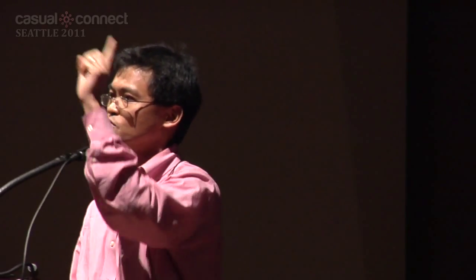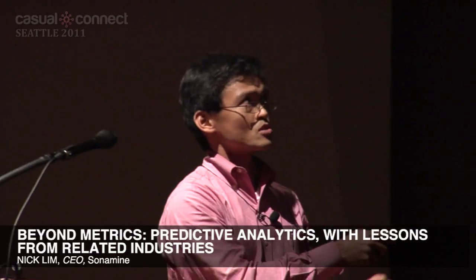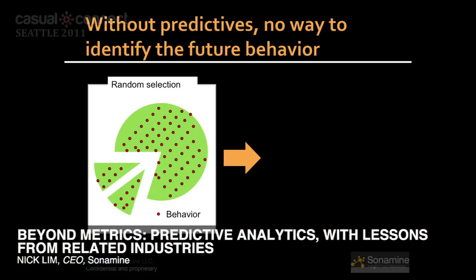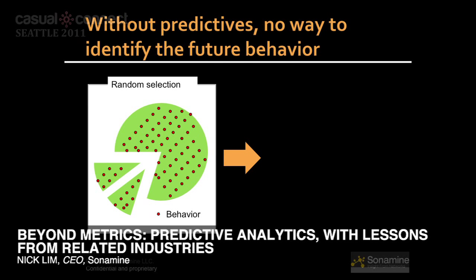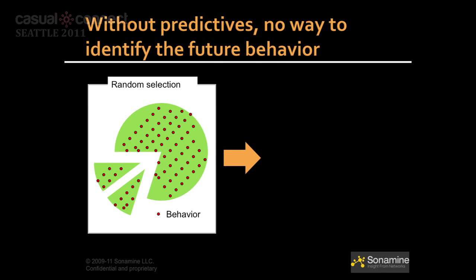Crash course on terms. If you have a group of players and the red dot represents a behavior you care about — say, a first-time conversion, a free player who pays for the first time — if it's randomly distributed in your population, you don't know who they are. If you take a 10% slice, you get 10% of that behavior. With predictives, when you take that 10%, you have concentrated most of the first-time converters into that slice. That's what predictives do for you.